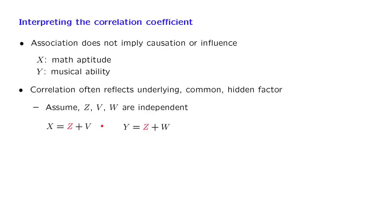Notice that there is no direct influence from x to y, or from y to x, but on the other hand, there is a common underlying factor, this random variable z, that affects both x and y.